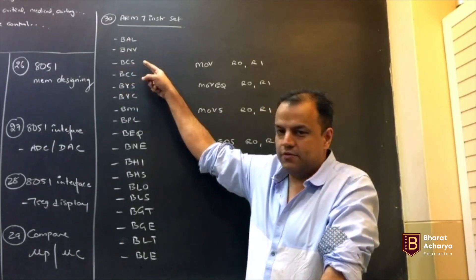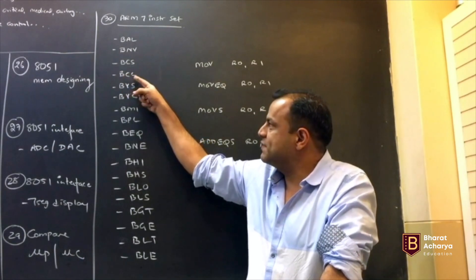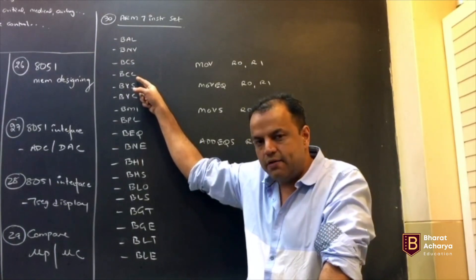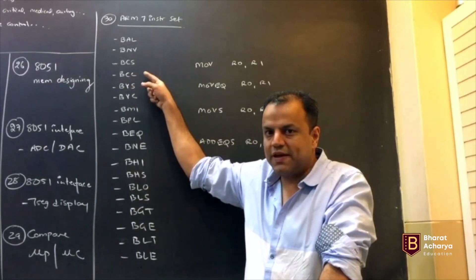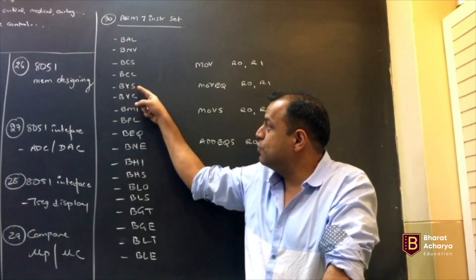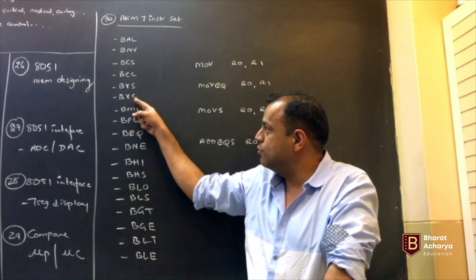Branch if carry set, so it's like jump if carry. Branch if carry clear. You will know why I am doing this. Just bear with me and listen. Branch if carry clear will jump if carry flag is 0. Branch if overflow set, so overflow flag 1. Overflow flag 0.